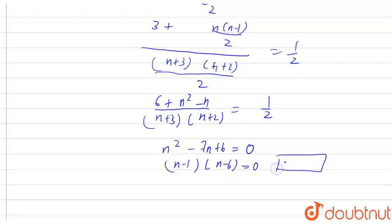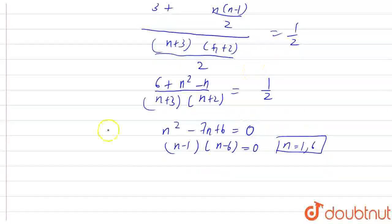So there will be 2 values of n, that is 1 or 6. Now we have to find which value of n is possible in this context.